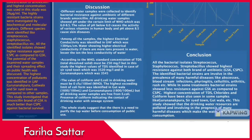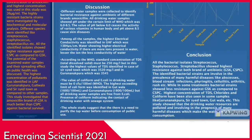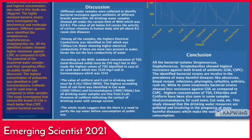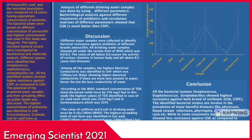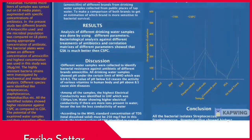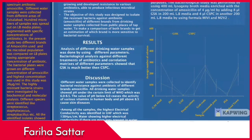The identified bacterial strains are involved in the prevalence of many harmful diseases such as abscess, bloodstream infection, pharyngitis, cellulitis, arthritis, and rashes. In some treatments, bacterial resistance was lower against GSK compared to CSBC. Additionally, the highest concentrations of total dissolved solids, chlorides, and coliforms were also observed in many samples from areas like Kurri Nalpura and Sir Syed Town.